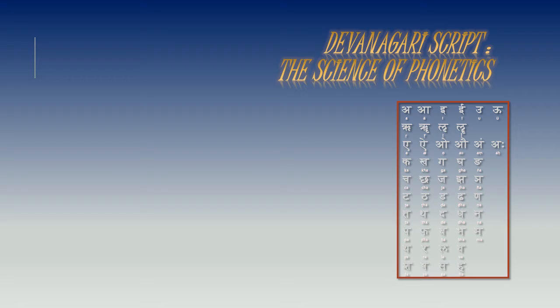Consonants are: K, K, K, G, G, G-N, AH, CH, CH, J, J, J, NA, T, TH, DA, D, DH, NA, T, TH, DA, D, DH, NA, P, PH, BA, BH, MA, Y, R, LA, VA, SH, SH, SH, SH-H, KSH, TRAGYA.